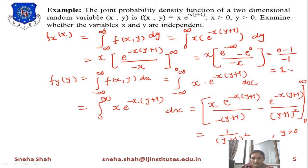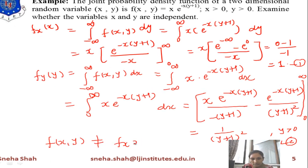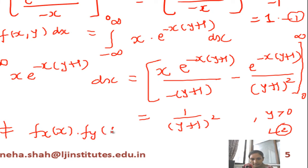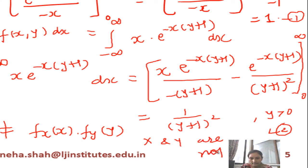From these two results — f_X(x) = 1 and f_Y(y) = 1/(y+1)² — we can check independence. Since f(x,y) = x·e^(−x(y+1)) does not equal f_X(x) · f_Y(y) = 1 · 1/(y+1)² when we multiply them, the product does not reproduce f(x, y). Therefore, x and y are not independent of each other.